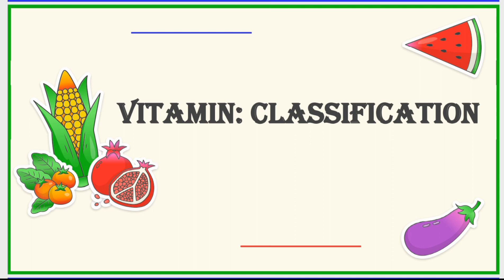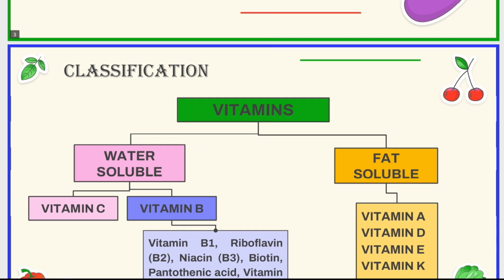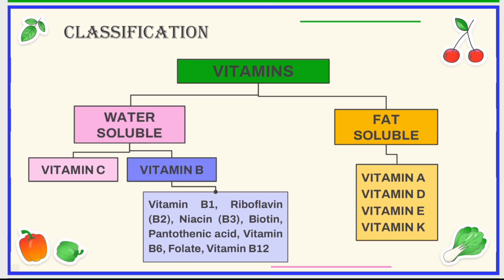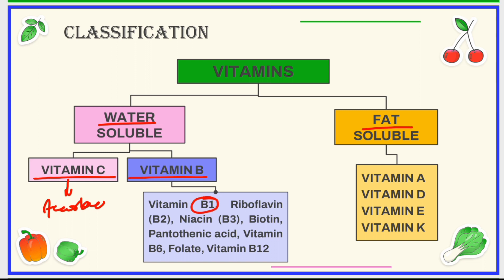Firstly, let's discuss about the classification of vitamins. Vitamins have been broadly classified into two categories: water-soluble and fat-soluble vitamins. Water-soluble vitamins are those which are easily soluble in water. These are divided into two categories: firstly, vitamin C, which is also known as ascorbic acid, and secondly, vitamin B, which has subcategories like vitamin B1, B2, B3, and others.